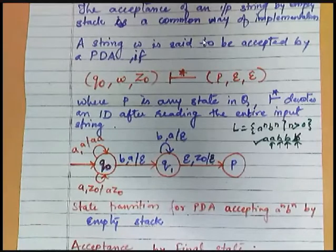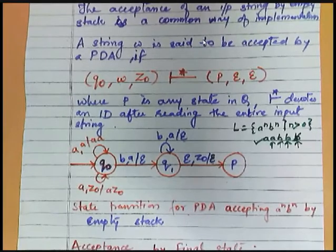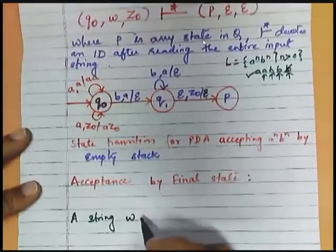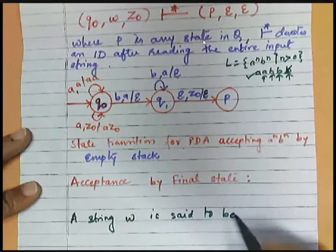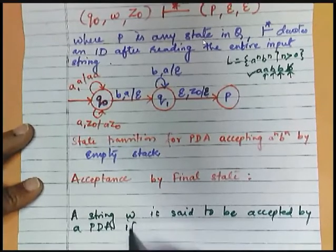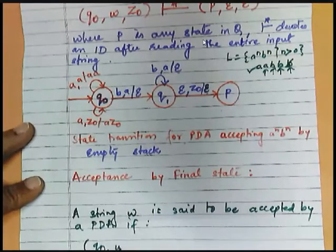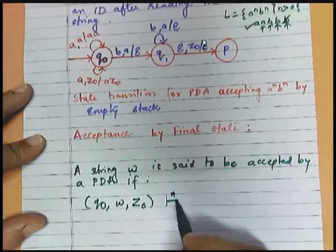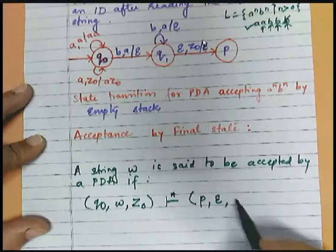In this way you have to explain this point. Second, if you have been asked how you will be representing the acceptance by a final state, so note it down. A string W is said to be accepted by a PDA if...